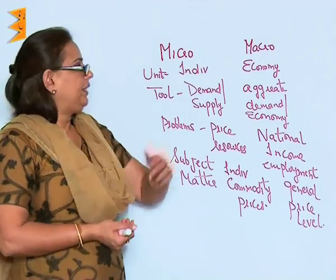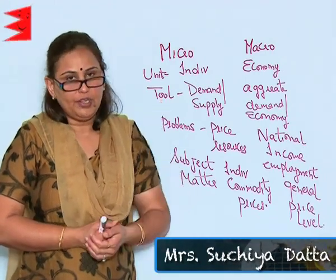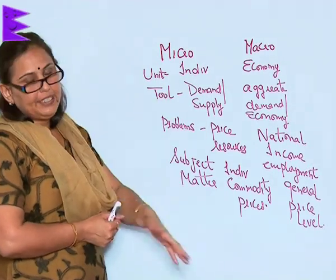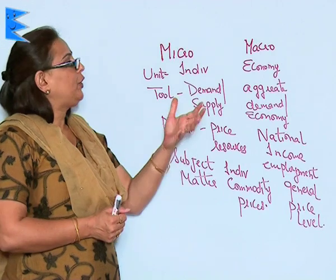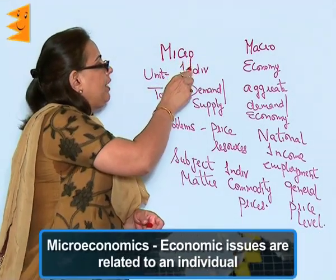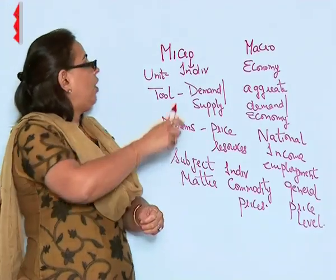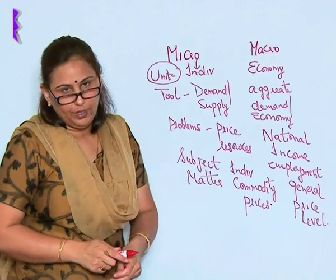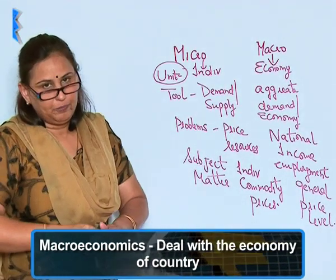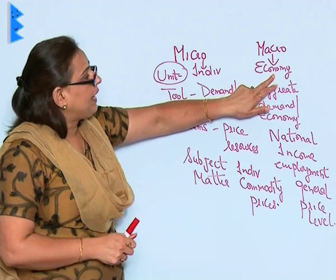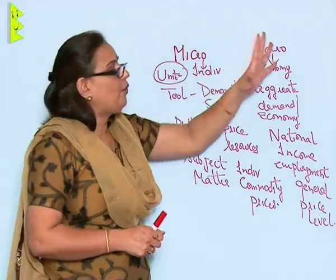Class 12th economics deals with microeconomics and macroeconomics. As this is the introduction to the entire book, let's understand in detail what each covers. In microeconomics, we deal with the situation of individuals — the unit of study is the individual. In macroeconomics, we deal with the economy of the country as a whole. Micro means small; macro means big.